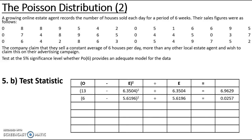For fours, I had 6 observed and was expecting just over 5, so that is a small contribution. For fives, I had 7 and was expecting just under 7, again a small contribution. For sixes, I had 5 and got just under 7, also a small contribution. For sevens, I had 3 and was expecting just under 6, so it is slightly creeping up.